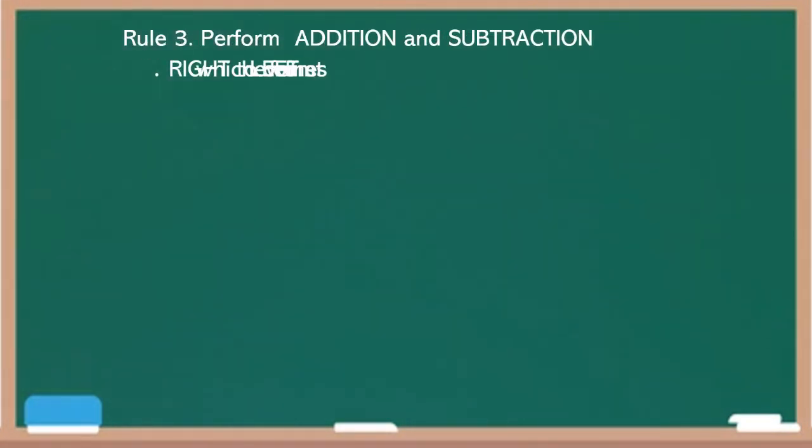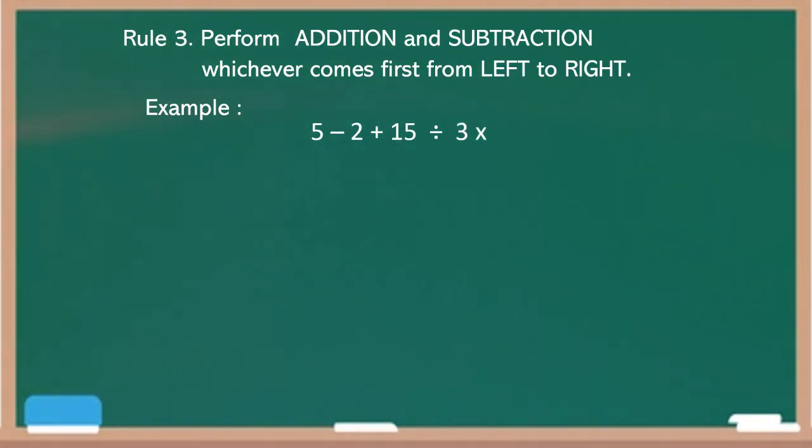Let's have rule number 3, perform addition and subtraction, whichever comes first from left to right. Example: 5 minus 2 plus 15 divided by 3 times 4. Take a look at the numerical expression. It has more than 1 operation: the subtraction, addition, division, and multiplication. Which operation do you think are we going to solve or perform first? Yes, correct. It is the division and multiplication. So we have 15 divided by 3 equals 5. Bring down all the numbers that we did not use: 5, 2, and 4. So we have the next operation, 5 times 4 equals 20.